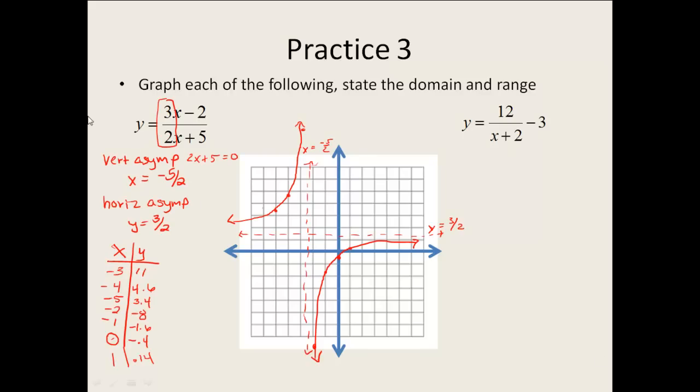On the first one, I started by finding what form I was in, and it was the AX plus B over CX plus D form. So I knew my vertical asymptote. I had to set my denominator equal to 0 and solve it, and I got X equals negative 5 halves. So my vertical asymptote is over here at X equals negative 5 halves. For my horizontal asymptote, I had to take my leading coefficients over each other. So I have 3 over 2. Horizontal asymptote is up here at 3 over 2. Then I picked my table of values. I picked numbers to the left of my vertical asymptote, numbers to the right of my vertical asymptote, plugged them all in, plotted each of my points.